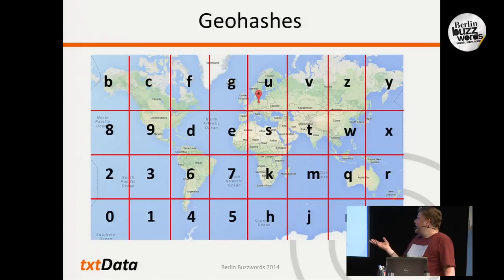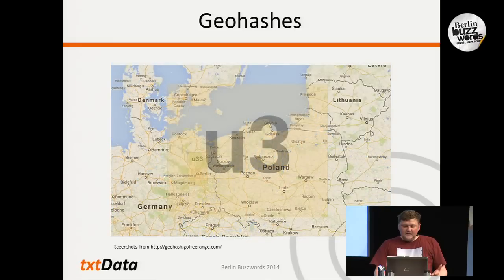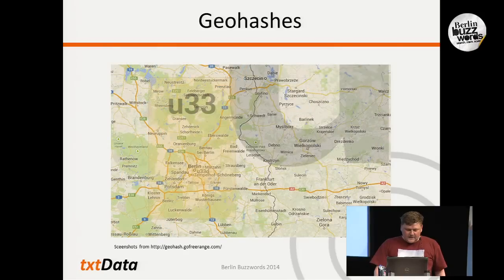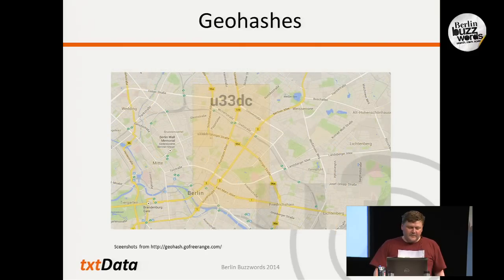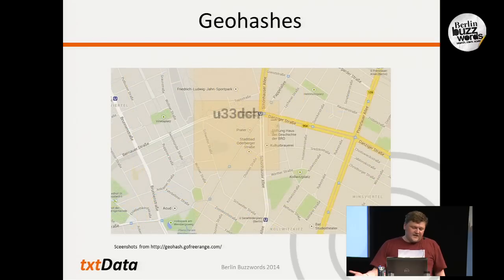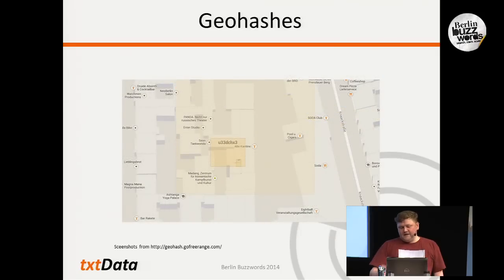We can zoom in and see how the subdivision works. Here is 'u' — the slice of the world representing us in geohashes. This is 'u3' — Eastern Germany and Poland. Largely Berlin and a bit of Brandenburg north of Berlin is 'u33'. Southeast Berlin is 'u33d', then 'u33dc', then the Kastanienallee area is 'u33dch', the Kulturbrauerei is 'u33dchx'. This is already fairly fine-grained — roughly where we are at the moment — with seven digits. This is roughly how geohashes work.